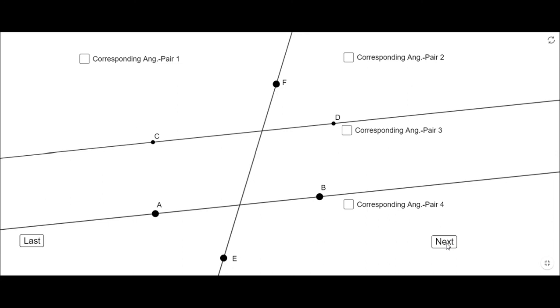They are on the same side of the transversal and we have four pairs of them. Let's see the first one. One and five, these two angles, as I said one exterior one interior, they both have the same measure you notice here.